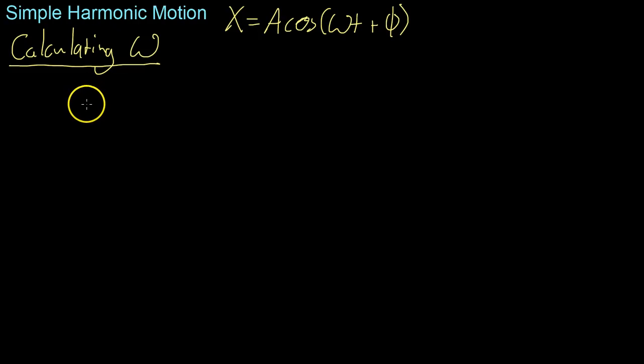Alright, so in this video we'll be continuing our coverage of simple harmonic motion, specifically looking at calculating the various values in these equations using known constants, as well as relating the various values so that we can solve for the motion giving a limited amount of information. So we'll start off first by calculating this omega value right here.